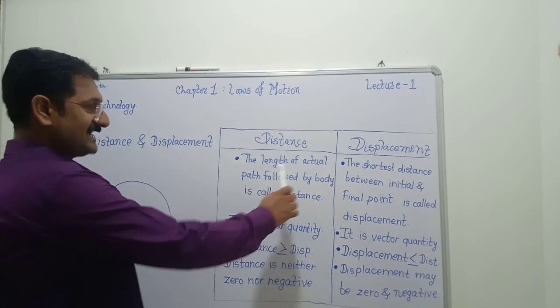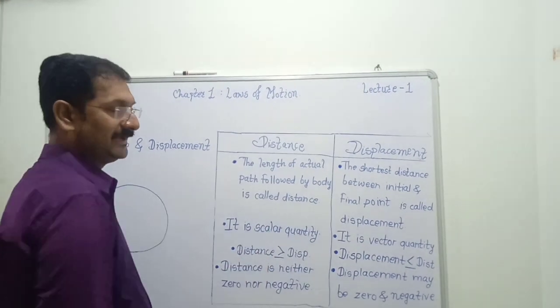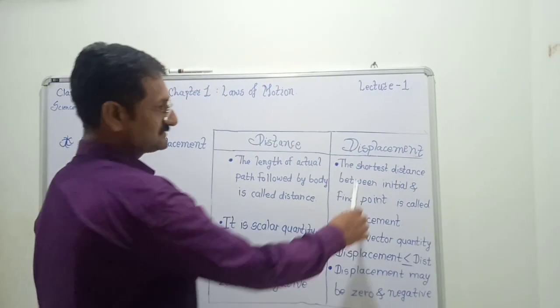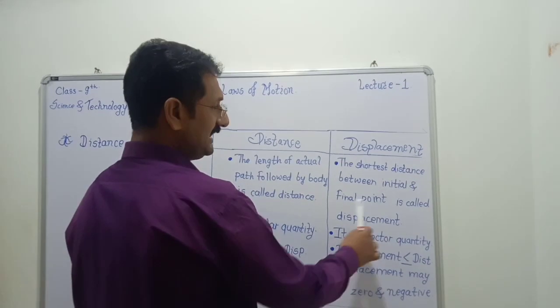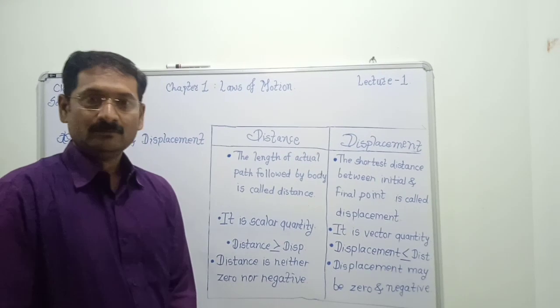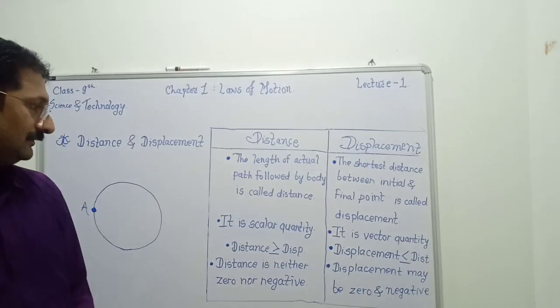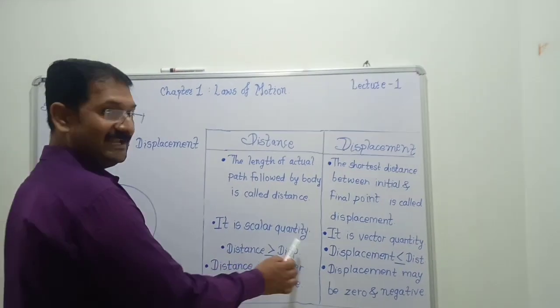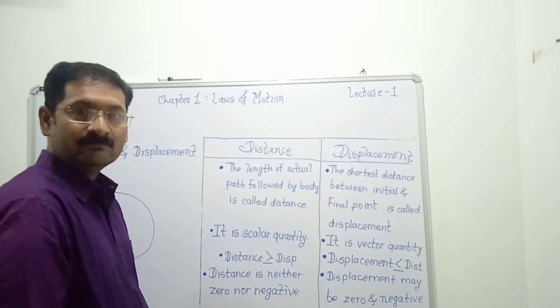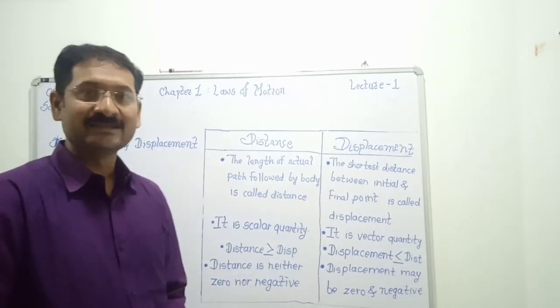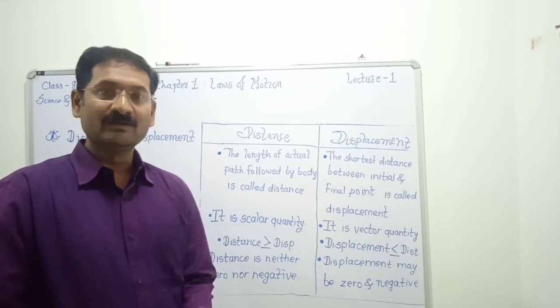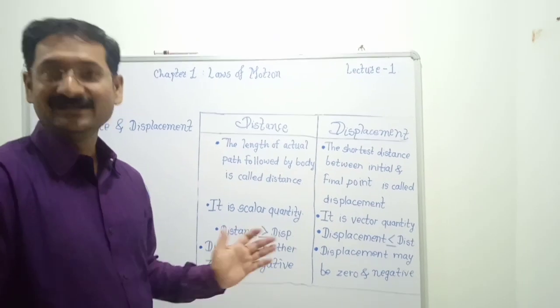Distance is the actual path followed by body. And displacement is the shortest distance between the initial and final point. Next point is that distance is a scalar quantity. Because when we consider distance, we think about only its magnitude, not about its direction.